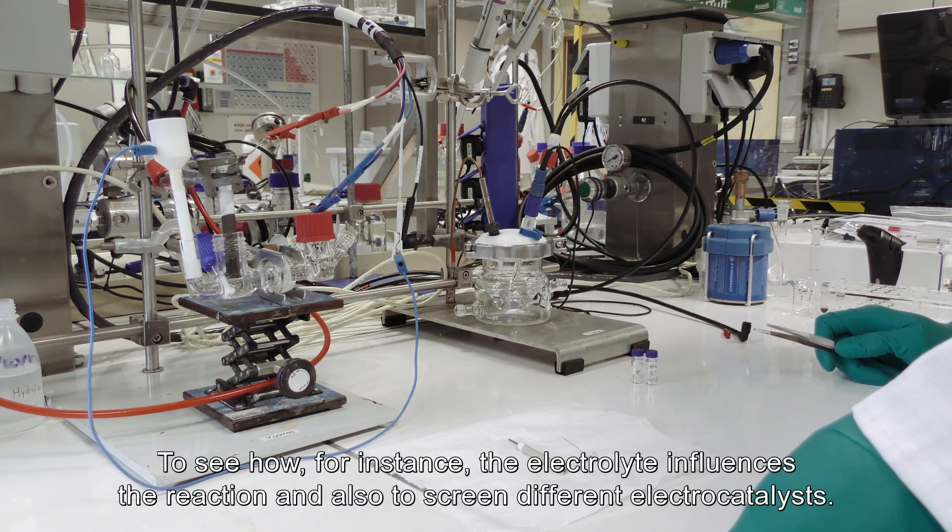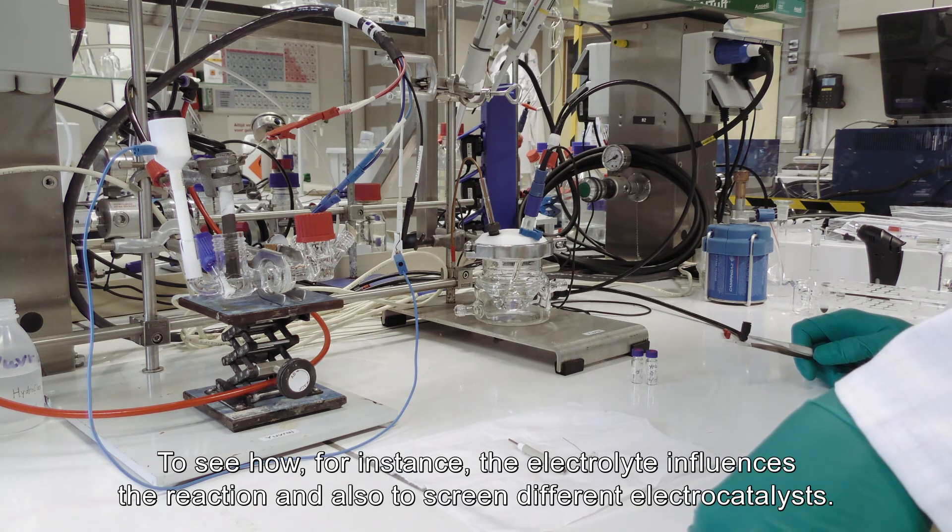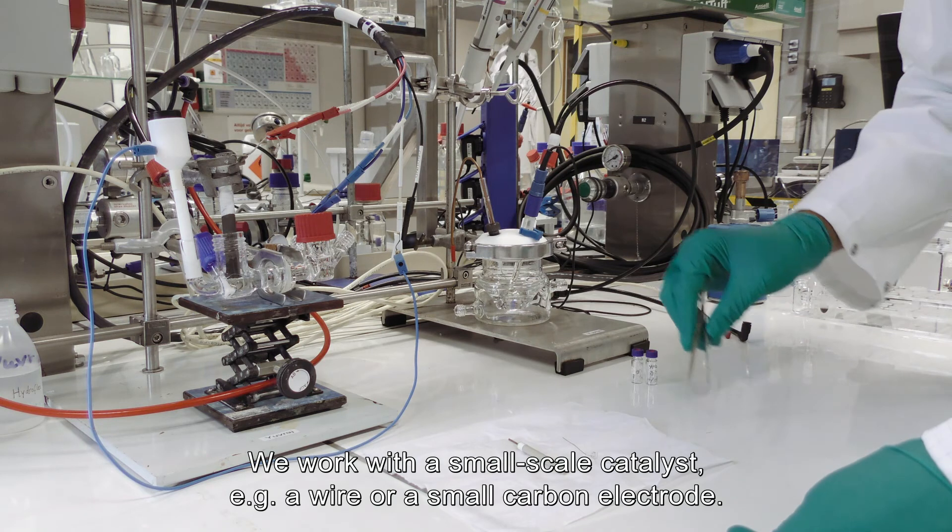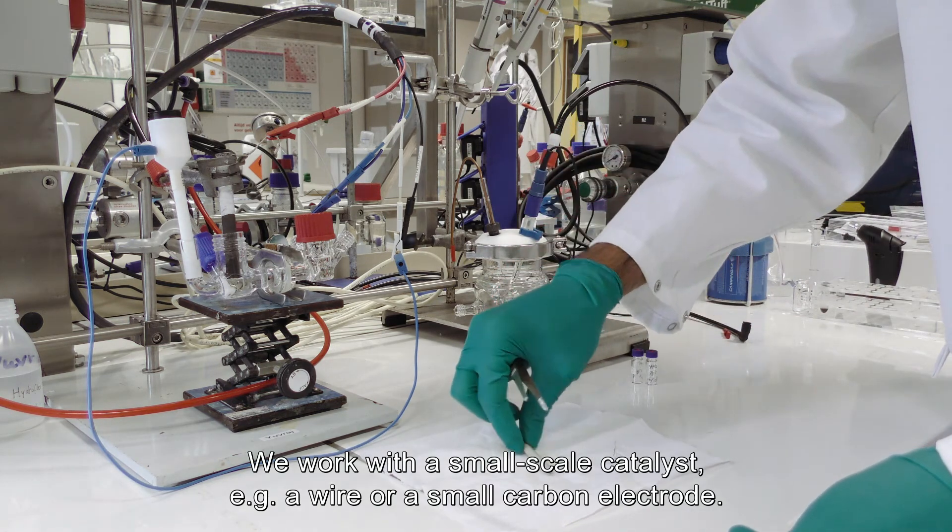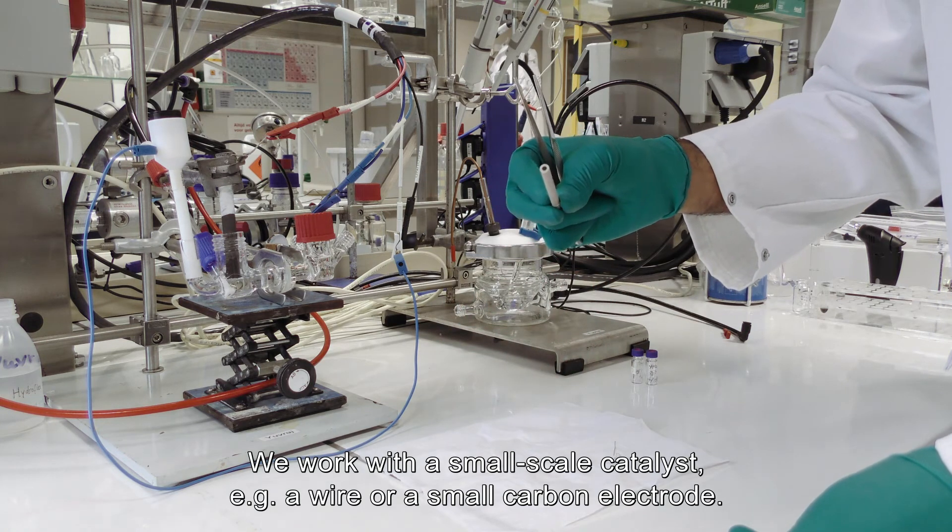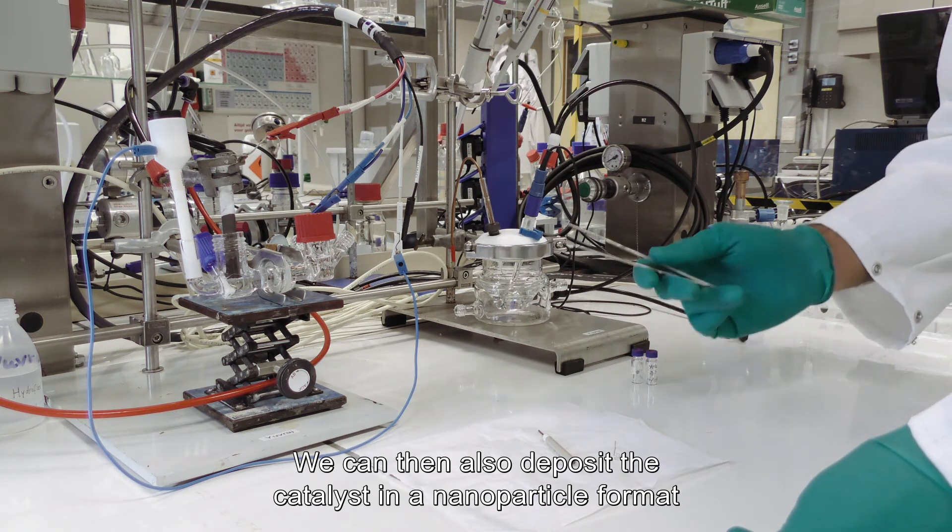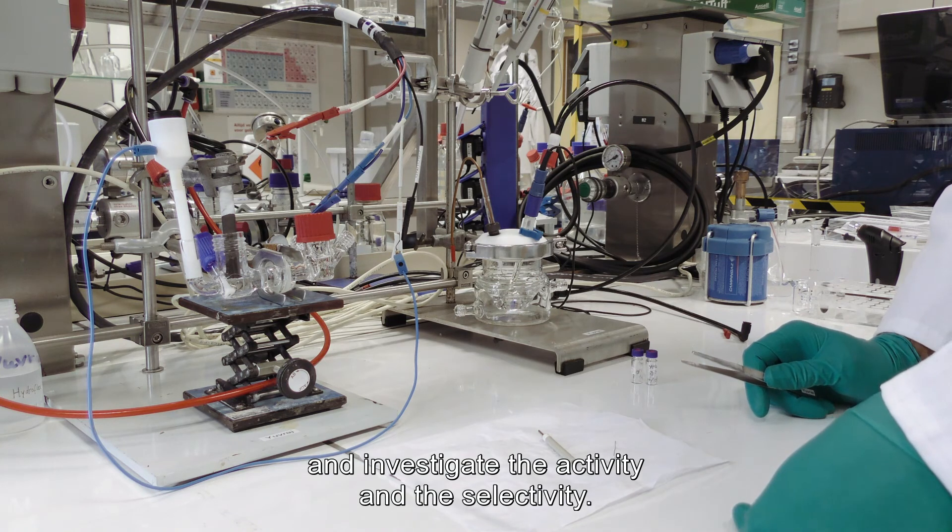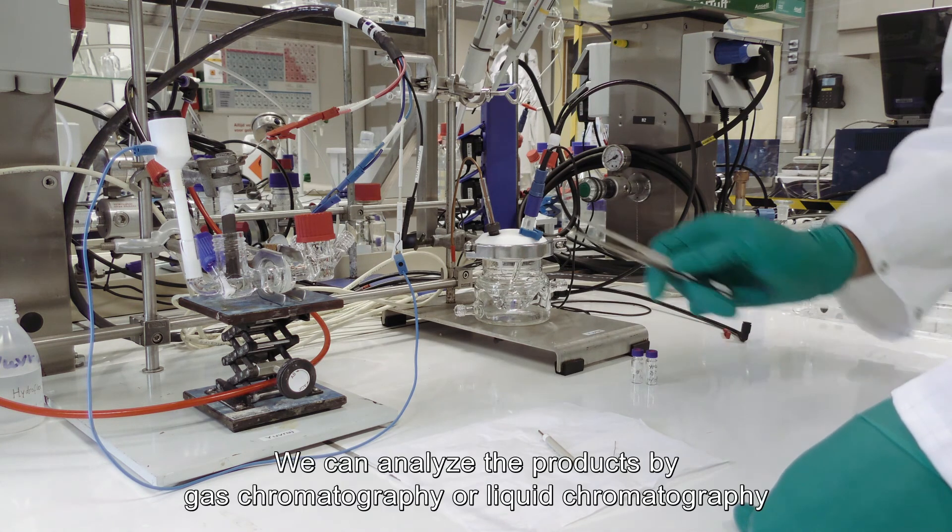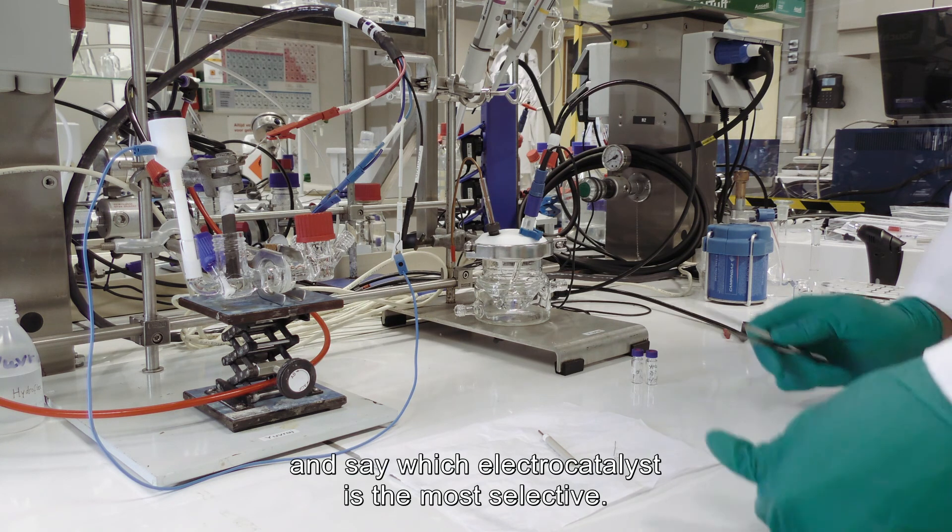We work with small scale catalysts, for instance a wire or a small carbon electrode, and then we can also deposit the catalyst in a nanoparticle format. Then we can investigate the activity and the selectivity. We can analyze our products by gas chromatography or liquid chromatography, and then we can say which electro catalyst is the most selective, for instance.